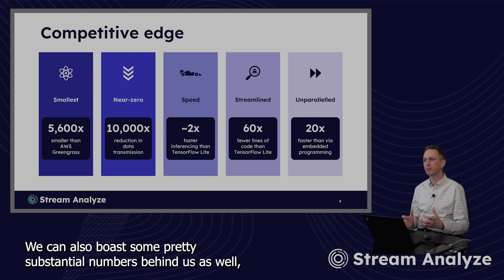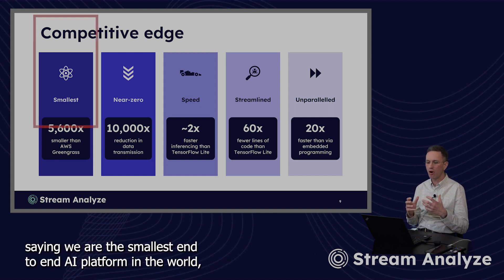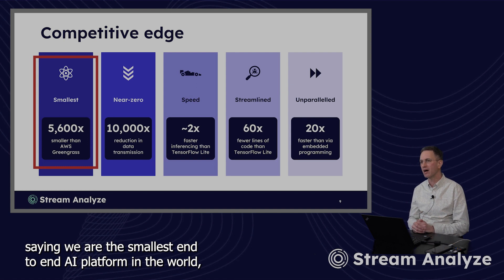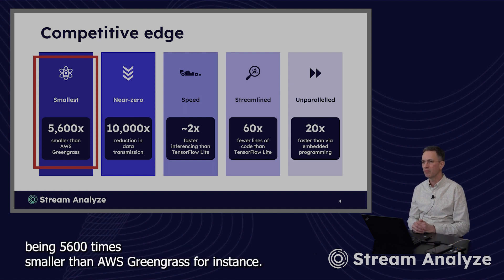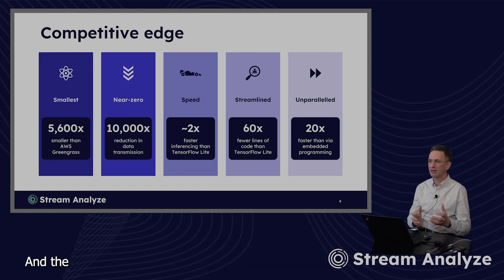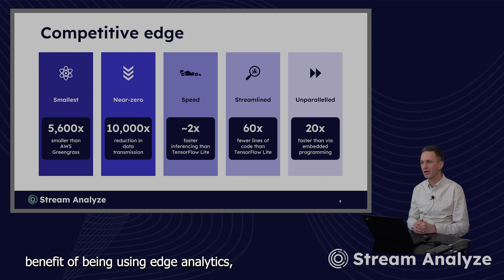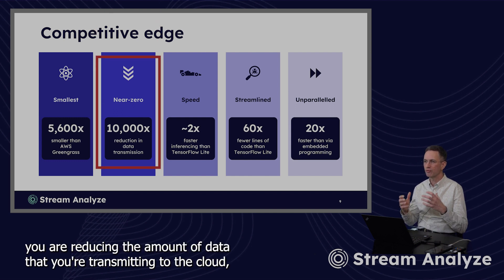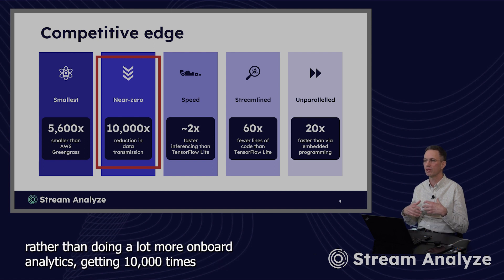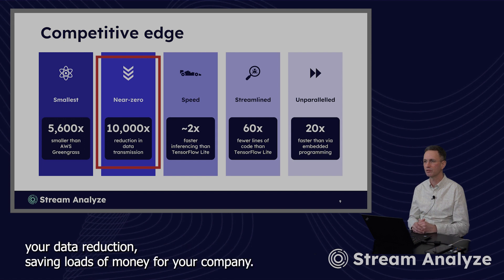We can also boast some pretty substantial numbers behind this as well, saying we are the smallest end-to-end AI platform in the world, being 5,600 times smaller than AWS Greengrass, for instance. And the benefit of using edge analytics — you are reducing the amount of data that you're transmitting to the cloud, rather than doing a lot more onboard analytics, getting 10,000 times your data reduction, saving loads of money for your company.